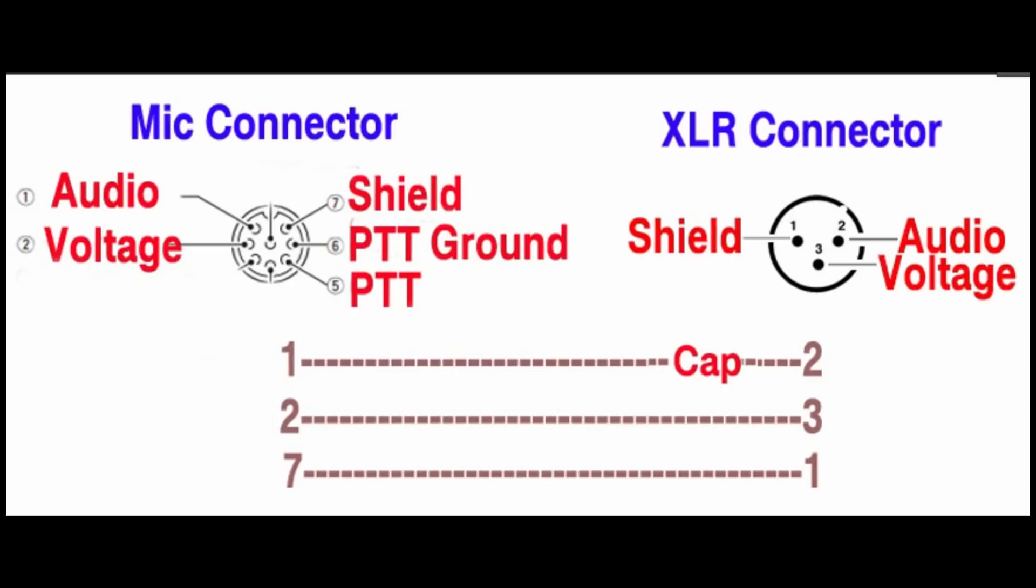On the ICOM mic connector, where they're using the eight-pin style metal heavy-duty mic connector, the pinout or connections to the pin is roughly the same as it was 20-30 years ago. Pin number one is the audio going into the transceiver. Pin number seven is the shield, so if you wanted to have a mic cable and only a mic cable, you'd use pin seven for the shield and pin one for the center conductor and that would be the microphone.